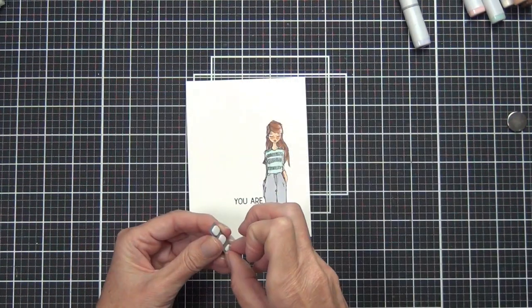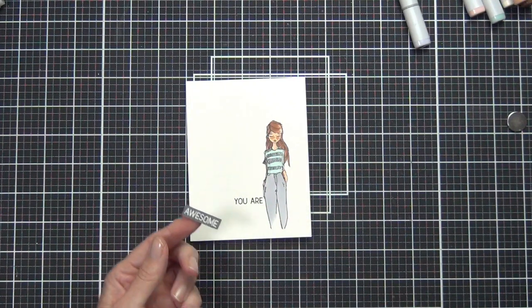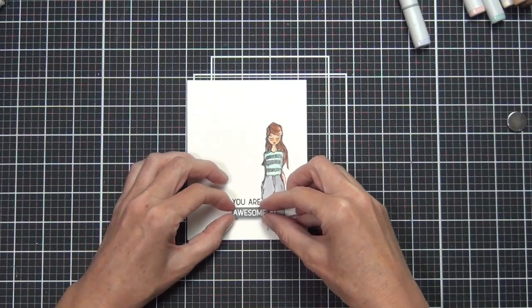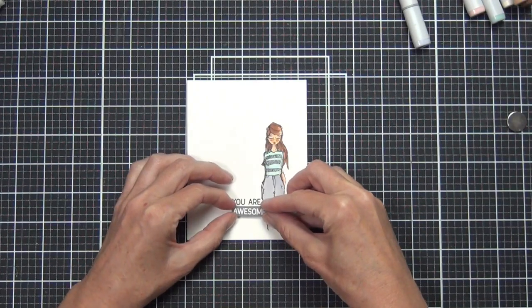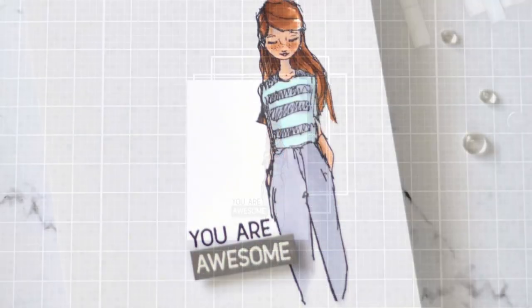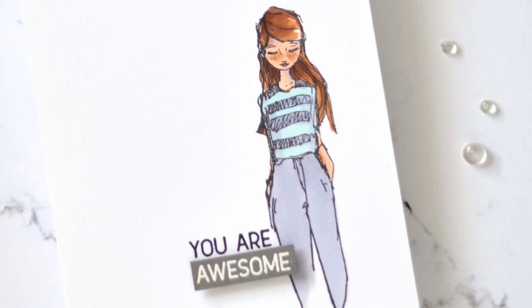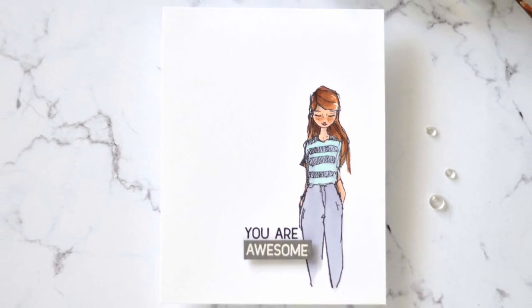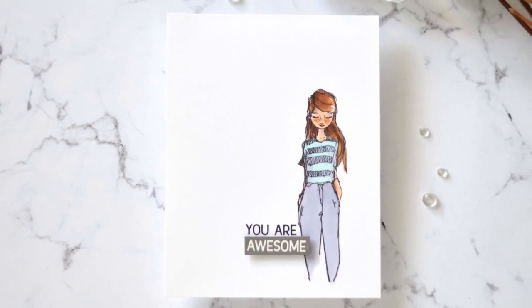I decided to do it in two pieces. I heat embossed a portion of the sentiment on some grey cardstock and then just stamped the other directly on the card front. This girl is from a set called Fluent Fantastic and I think she's beautiful.